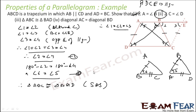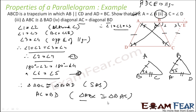Since the triangles are congruent, AC equals BD by corresponding sides of triangles ABC and BAD.